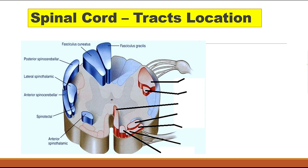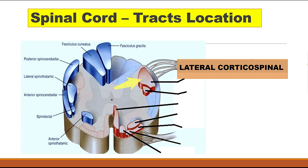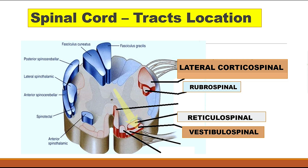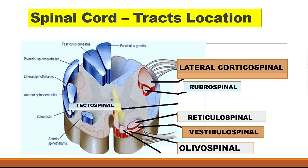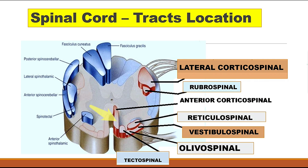In this spinal cord cross section, the locations of the descending tracts are as follows: the lateral corticospinal tract is in the lateral white column; below it is the rubrospinal tract. The remaining tracts are in the anterior white column: the reticulospinal tract, then the vestibulospinal tract anterior to it, the olivospinal tract medial to vestibulospinal, the tectospinal tract medial to olivospinal, and the anterior corticospinal tract is most medial in the anterior white column.